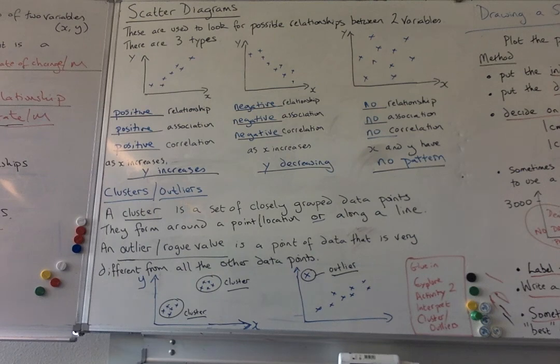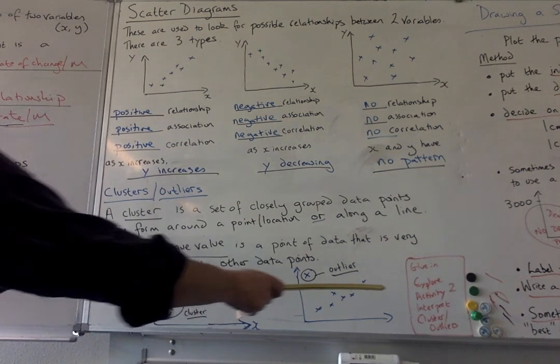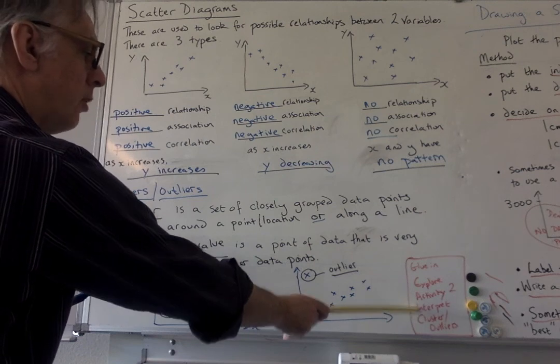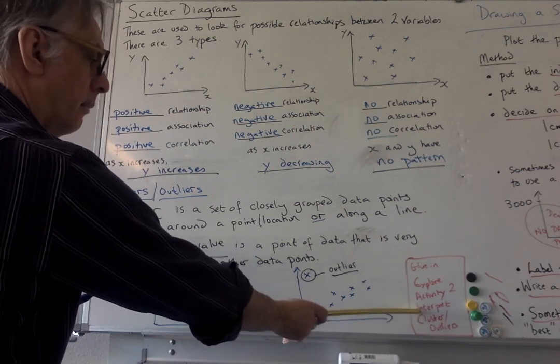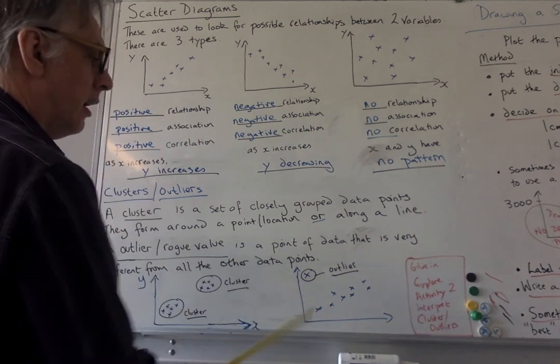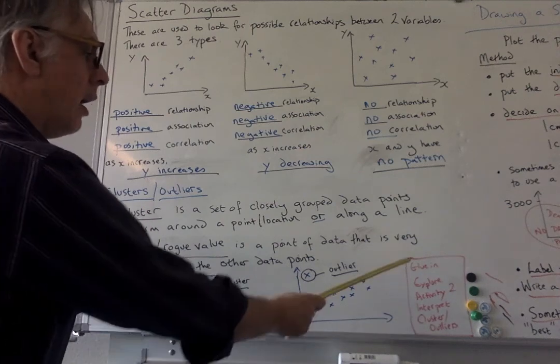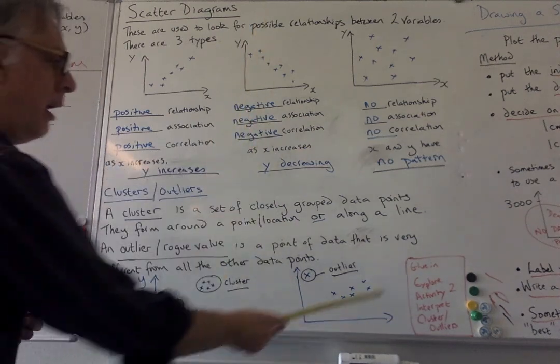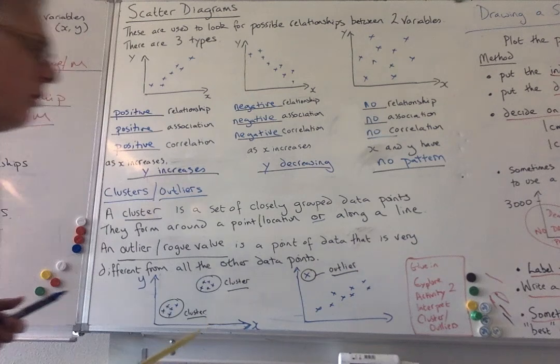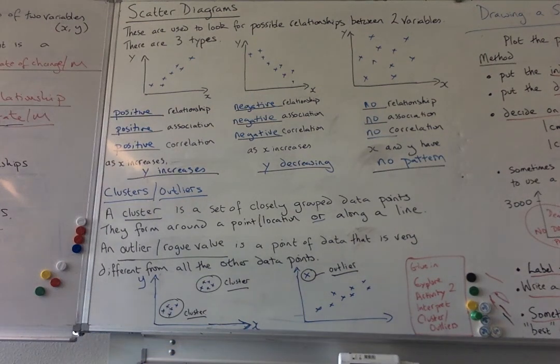So you should have done activity 2 at this point as well, the explore activity 2. So you did some about interpreting, making interpretations about clusters, cluster areas and outliers. So once you've written these down I would suggest that you glue that page into your notebook as just a worked example for yourself. And that's all you need for this. Thank you.